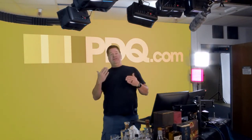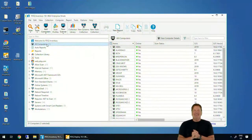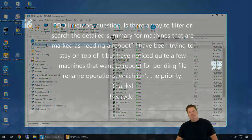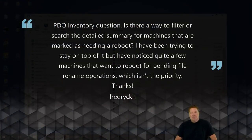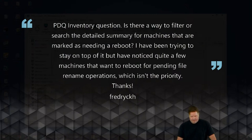Welcome everybody to PDQ.com — today you ask the questions and I quickly deflect the answers to Colby and crew. Should we jump right in? Dear Lex and crew, PDQ Inventory question: is there a way to filter or search the detailed summary for machines that are marked as needing a reboot? I've been trying to stay on top of it but have noticed quite a few machines that want to reboot for pending file rename operations, which isn't the priority. Thanks, Frederick.